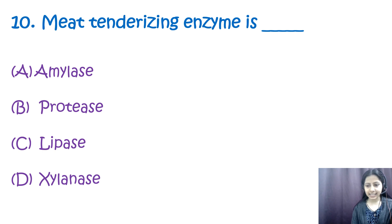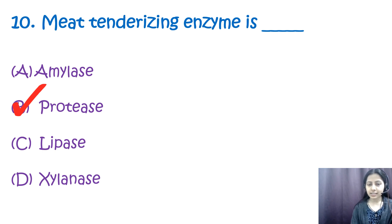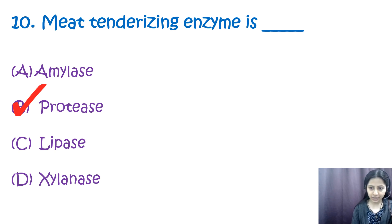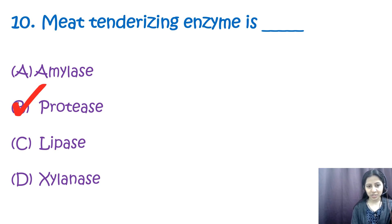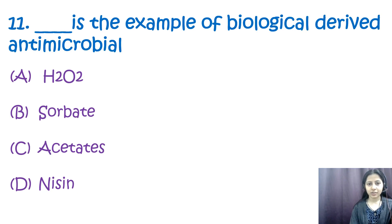Question number ten: meat tenderizing enzyme is — options are: a) amylase, b) protease, c) lipase, d) xylanase. The correct option is b, protease. Protease breaks down proteins into smaller amino acids; since protein is the main component of muscles and connective tissues, protease makes meat more tender and easy to chew. Amylase breaks down starches into sugars; lipase breaks down fats into glycerol and fatty acids; xylanase breaks down xylans (hemicellulose) into xylose and other sugars.